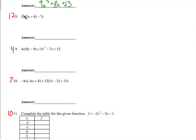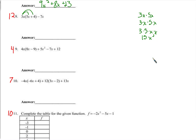Here we're distributing an x, so we should get some x squared terms and higher powers. 3x times 5x — that's 3 times x times 5 times x. We can rearrange this using the commutative property of multiplication: 3 times 5 times x times x gives us 15x squared. 3x times 4 is 12x, minus 7x, so 15x squared plus 5x.